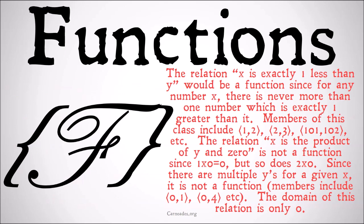The relation 'x is exactly one less than y' would be a function since for any number x, there's never more than one number which is exactly one greater than it. Members of this class would include (1,2), (2,3), (101,102), etc.